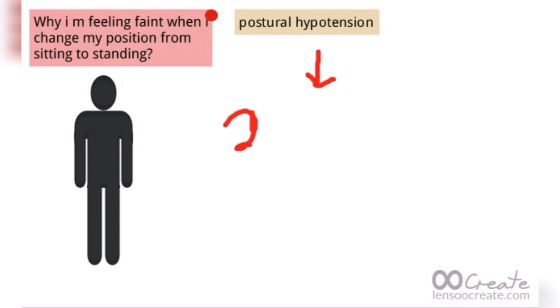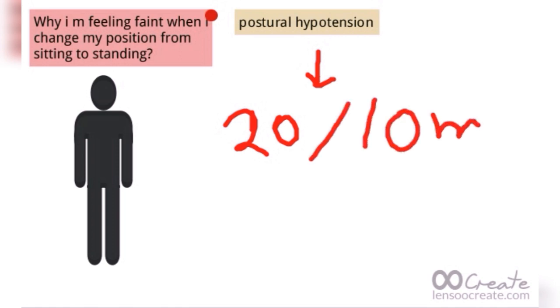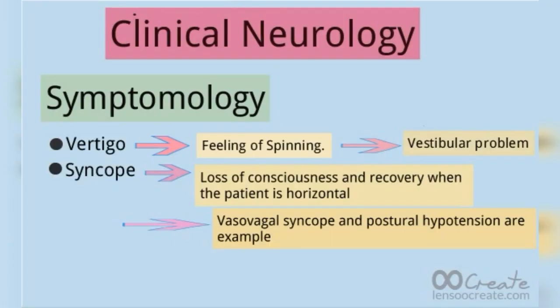Postural hypotension is defined as a decrease of at least 20 mmHg in systolic blood pressure and at least 10 mmHg in diastolic blood pressure when the person changes position from sitting to standing.